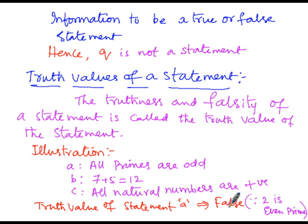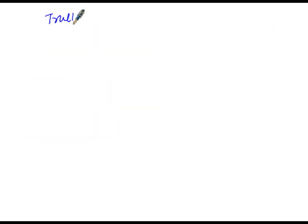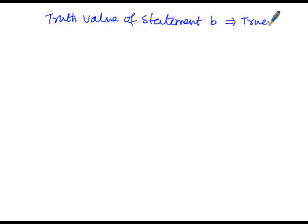Regarding statement B: '7 plus 5 equals 12.' On the left-hand side, 7 plus 5 equals 12, and the right-hand side is also 12. Therefore it is a true statement. The truth value of statement B is true (T), because LHS equals RHS, that is 12 equals 12.